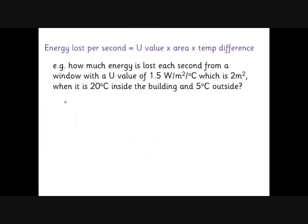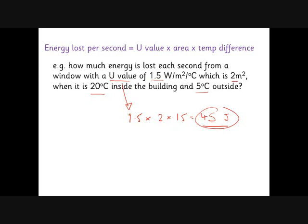For example: a window has a U-value of 1.5, it's 2 square metres, and you're keeping your house at 20°C inside while it's 5°C outside. The energy lost per second = 1.5 × 2 × 15 = 45 joules per second. That means you need to be producing 45 joules of energy per second inside your house just to keep it at the same temperature. The bigger the U-value, the more energy you need to put in — so when looking at insulated materials, you want the smallest U-value you can find.